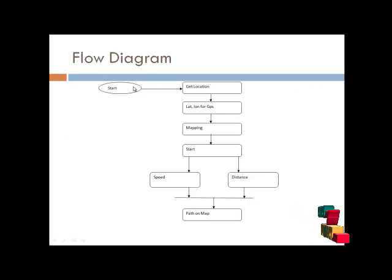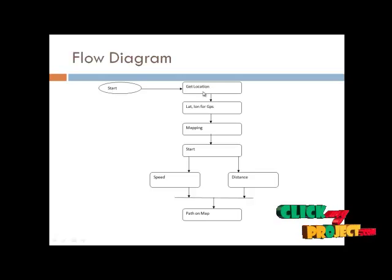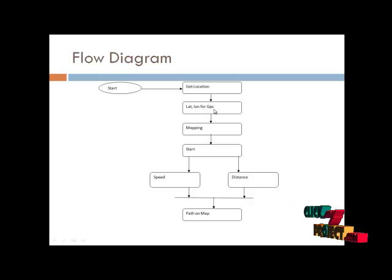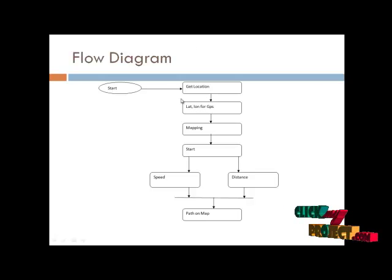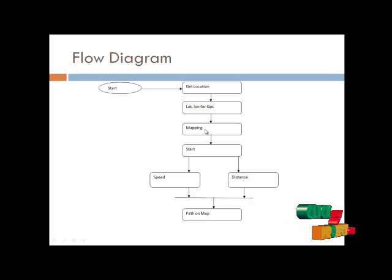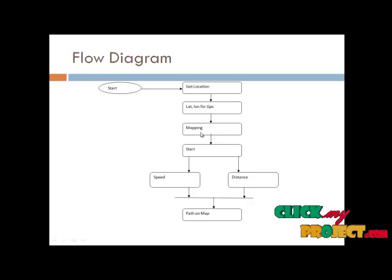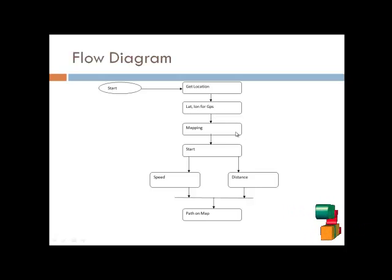Let us see the flow diagram. First, when we start the application, the current location is automatically obtained via GPS. The location is then forwarded to Google Maps. Next, we go to the mapping step, which includes the full mapping for the application to travel.